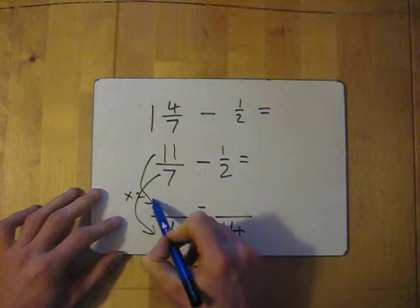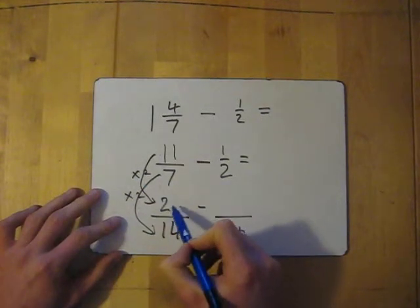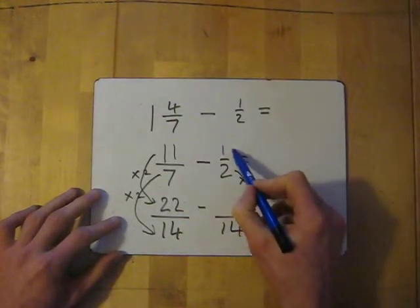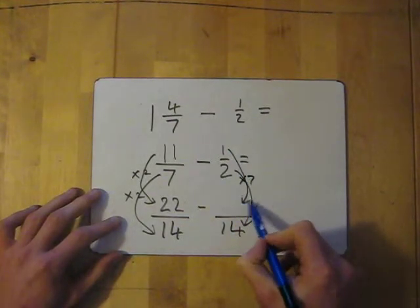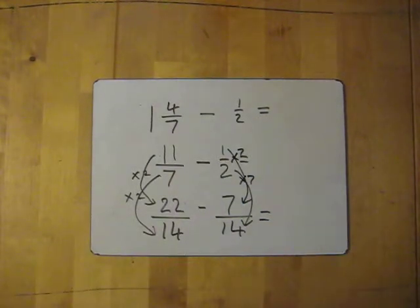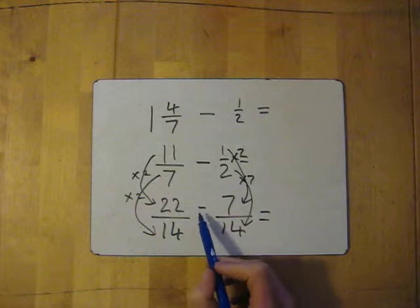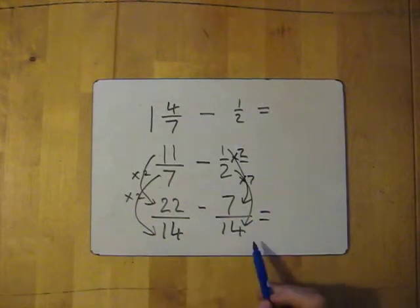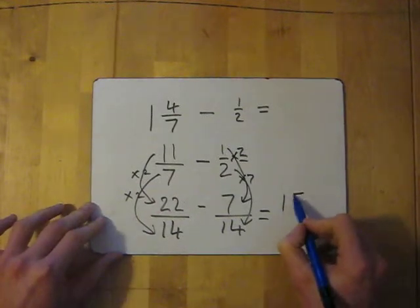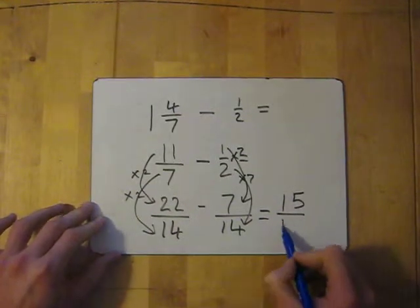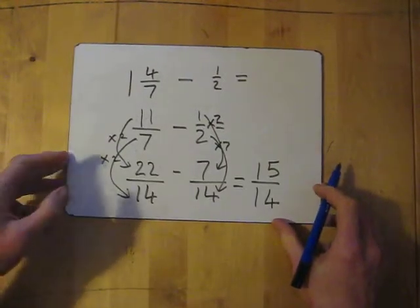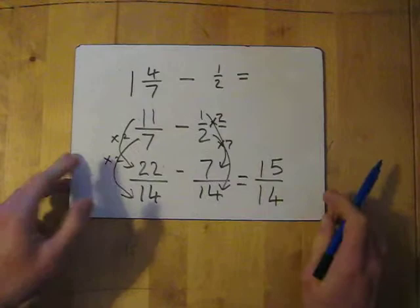I must times the top by two as well. What have I done to two to get to 14? I've times it by seven. What must I do to one? I must times it by seven. Now, dead simple. I've got my 22 take away seven and the 14. The denominator stays the same. 22 take away seven gives me 15. My denominator stays the same which is 14. So it's 15 over 14. One and four sevenths take away half and that's our answer.